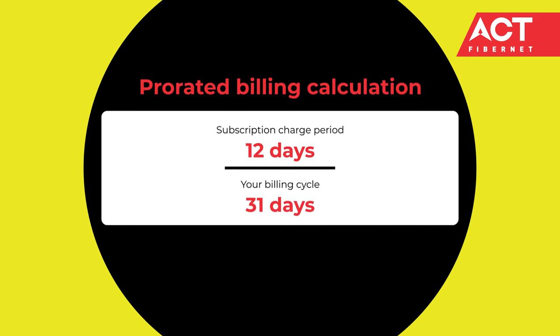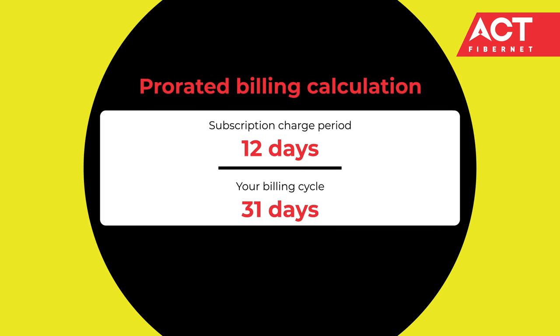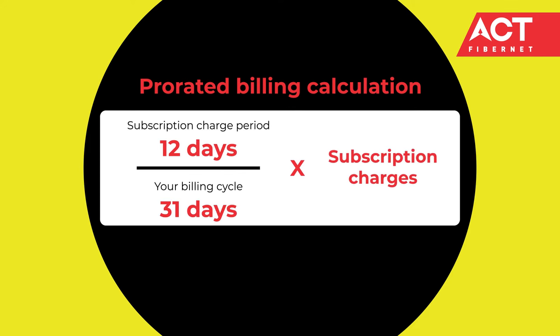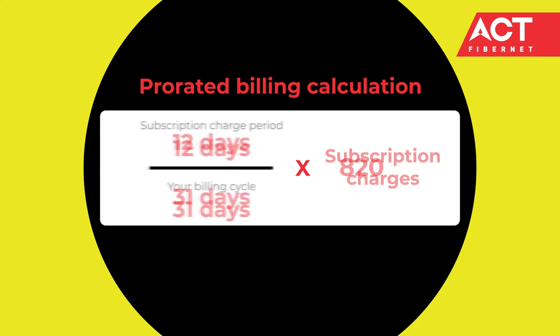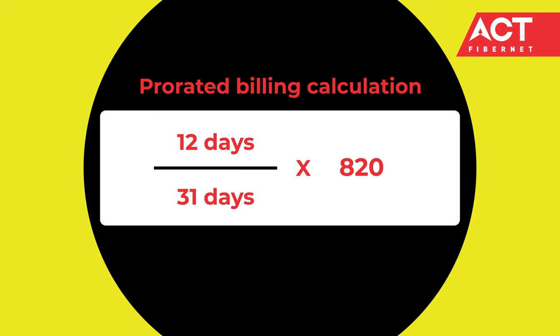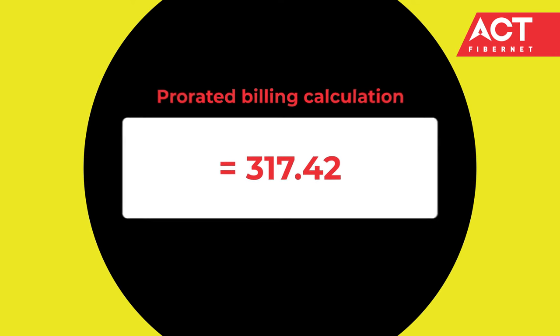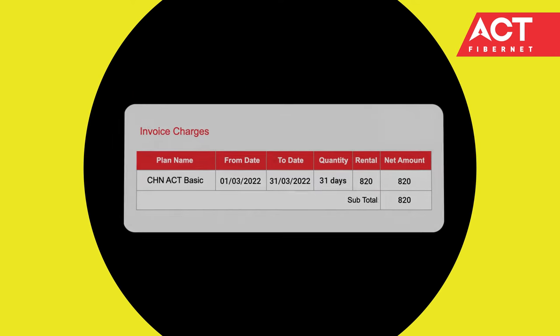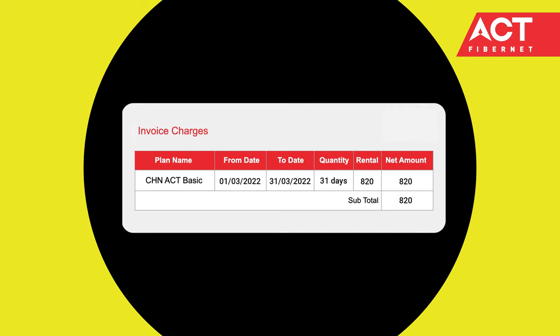Divide your charge period of 12 days by your bill period of 31 days, and then multiply by your subscription charge. This gives you the partial month charge. From the next billing cycle, you will be charged only as per your cycle as long as you do not change your plan.